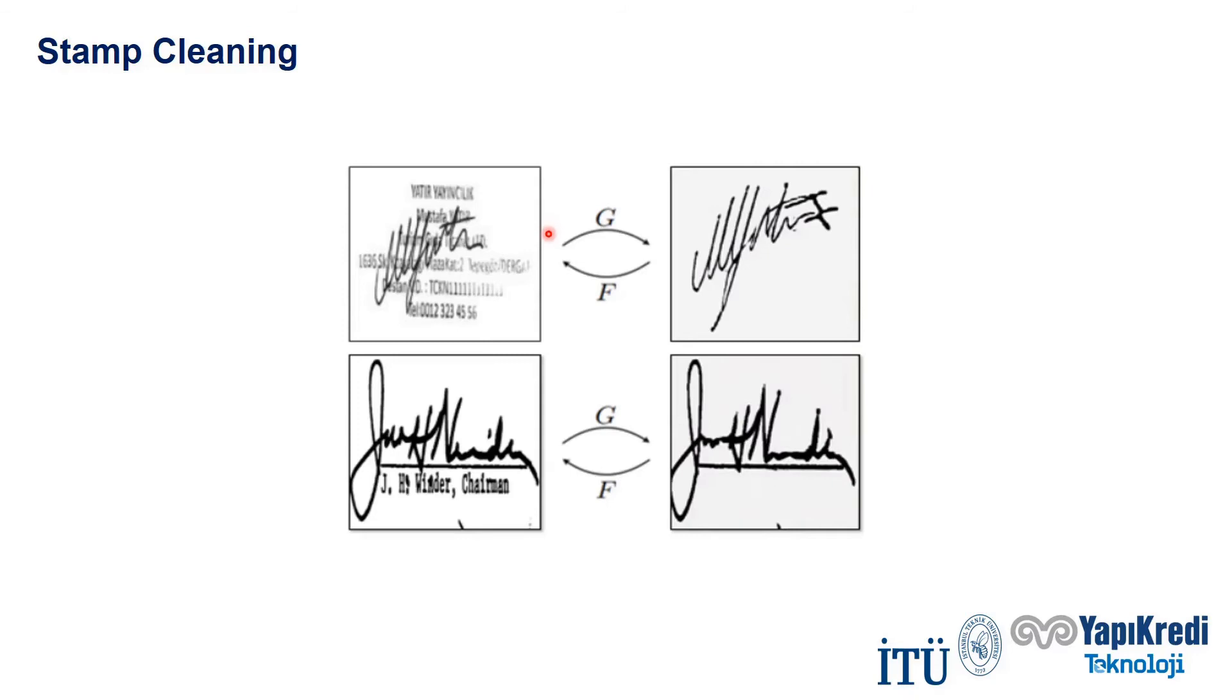We trained our model with thousands of unstamped and stamped signatures. G function denotes the mapping from stamped signature to unstamped version. F function denotes the mapping from unstamped signature to stamped version.